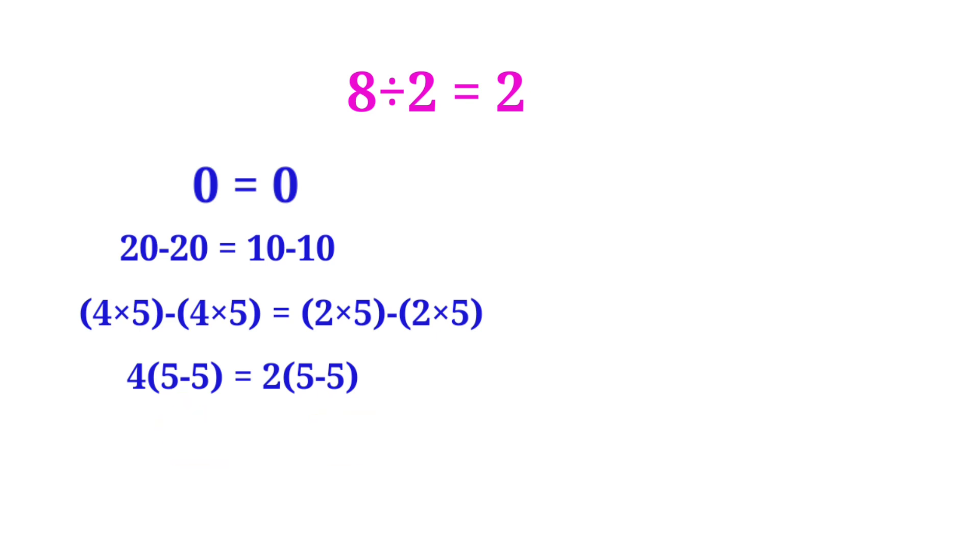Then we can write this as 4 times (5 minus 5) equals 2 times (5 minus 5). Now see here, 5 minus 5 and 5 minus 5, both sides are common, so we can cancel the same terms. Then 5 minus 5 and 5 minus 5 are cancelled. Now the remaining is 4 equals 2.